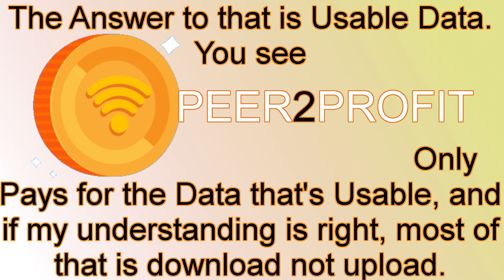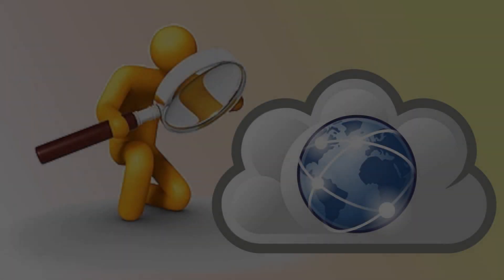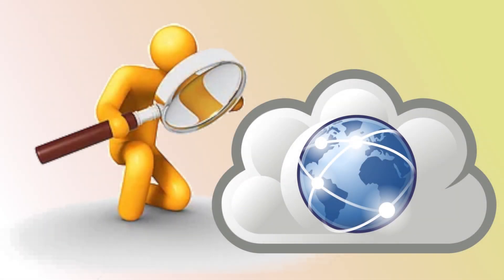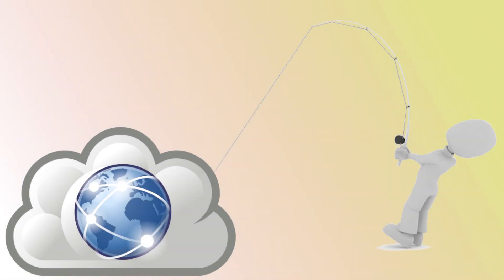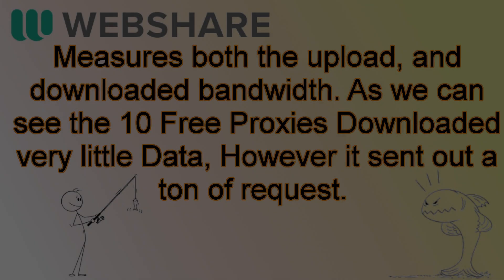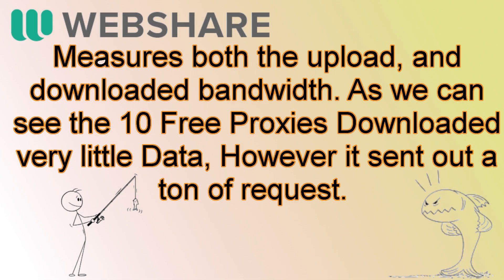The answer to that is usable data. Peer2Profit only pays for the data that's usable, and if my understanding is right, most of that is downloaded data and not uploaded data like requests. When Peer2Profit sends out a search request, some bandwidth is used — just enough for the internet to know what kind of request Peer2Profit is making. The data you and I get paid for is the downloaded data: after Peer2Profit sends out a request and finds what it's looking for, it pulls the data from the cloud and we get paid for that downloaded bandwidth. WebShare measures both the upload and download bandwidth, so the 10 free proxies downloaded very little data but sent out a ton of requests.